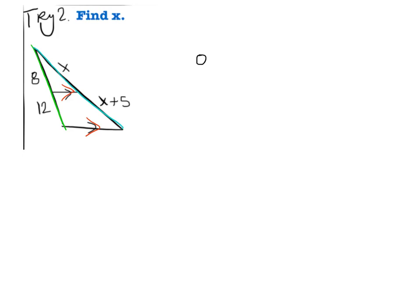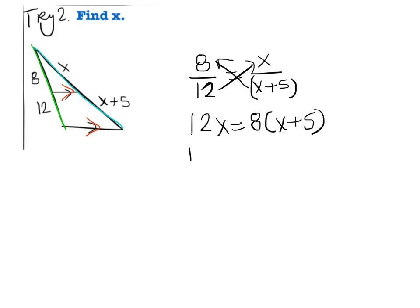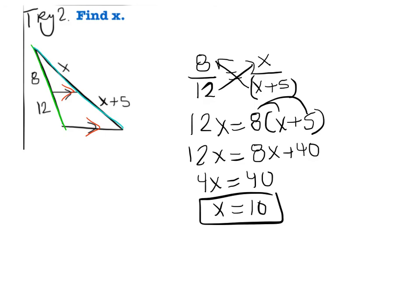What you should have written, I'm hoping, is the ratio 8 twelfths and x over x plus 5. Now again, you should be seeing this quantity here where you have two terms. That means that the 8 is going to multiply not just with the x but also with the 5. When I cross multiply, I get 12x equals 8 times the quantity x plus 5. When I continue with this problem, I have to distribute. So I get 12x equals 8x plus 40. I'm going to subtract 8x from both sides to get 4x equals 40. And divide by 4, getting x equals 10. That's our final answer.